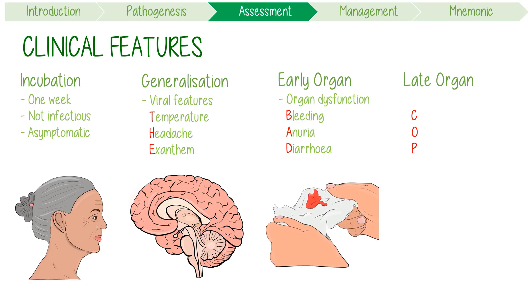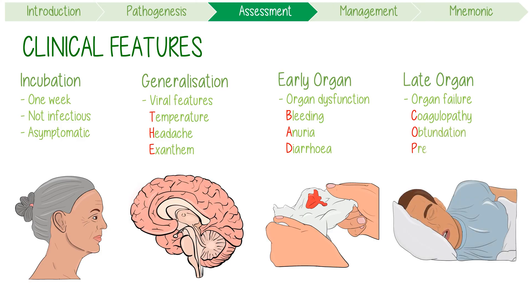Lastly, Phase 3 causes severe complications due to complete organ failure, including coagulopathy like DIC, obtundation, and preagonal signs like gasping.